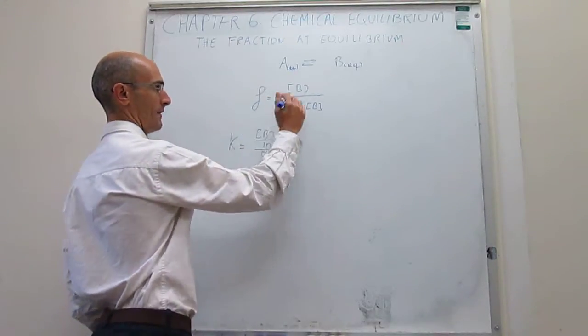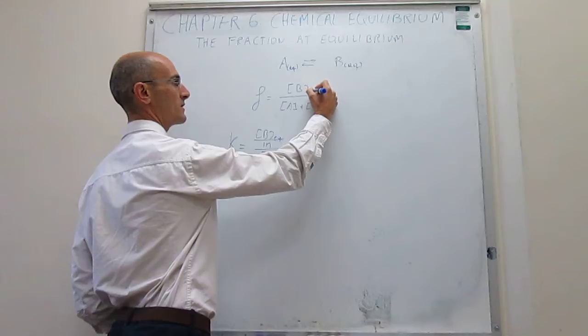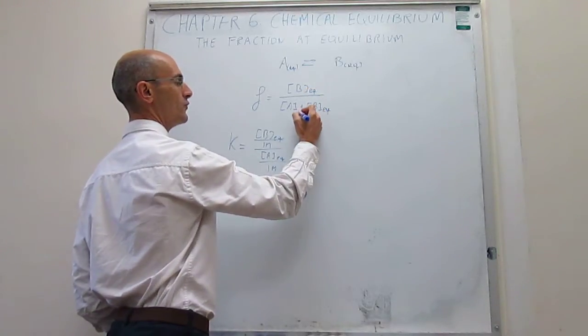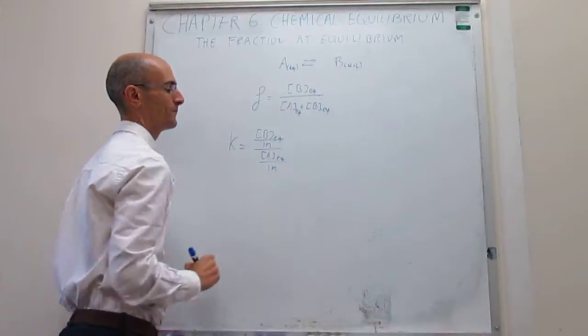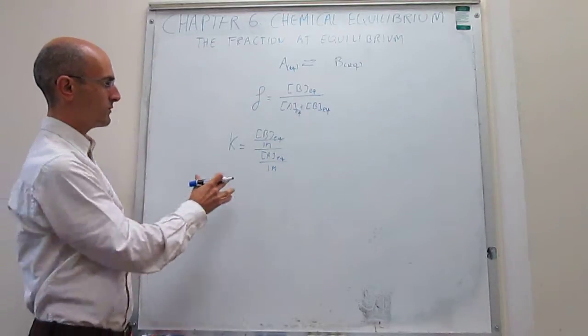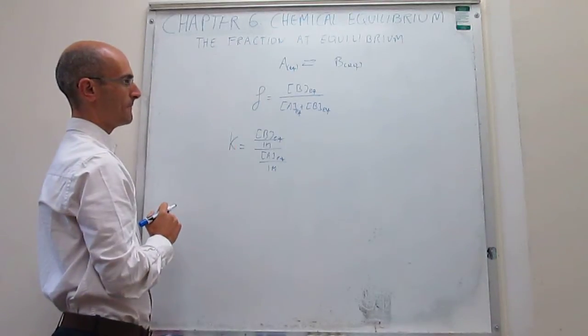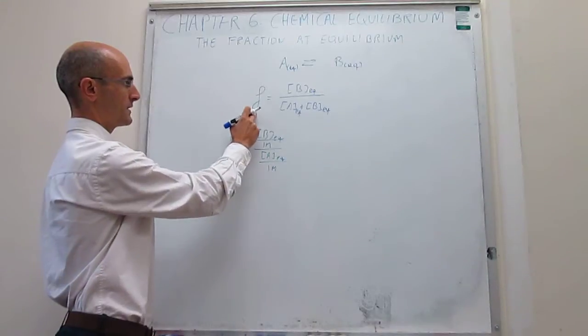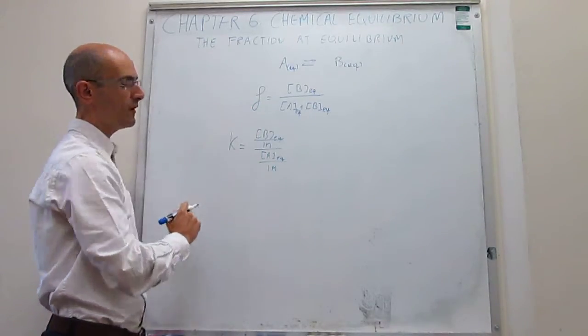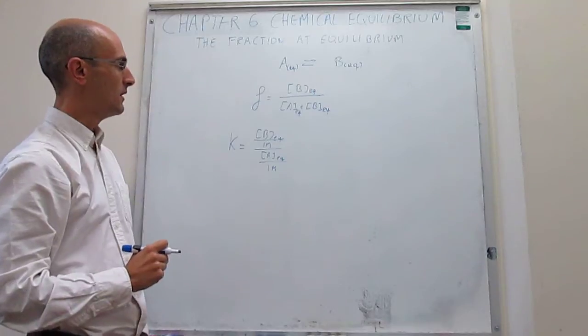Again, the definition of the fraction at equilibrium asks you to actually do this when you reach equilibrium. So the question is, how can we put this fraction at equilibrium as a function of the equilibrium constant? We don't directly have the equilibrium constant anywhere here, but one thing we can do to incorporate the equilibrium constant is divide through by the molar concentration of reagent.